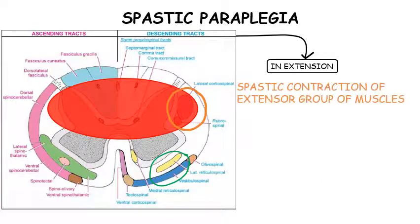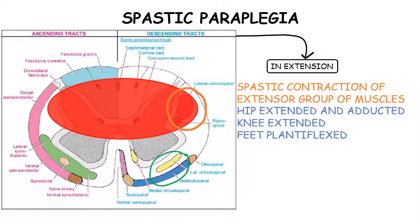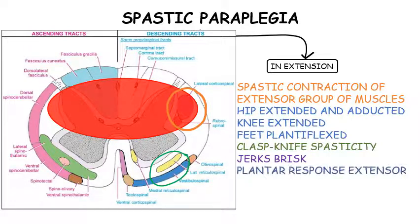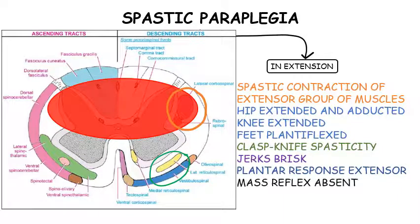Among the clinical features, there is spastic contraction of the extensor group of muscles, leading to adducted and extended hip, extended knee, and plantarflexed feet. Typical Phillipson's reflex or clasp-knife spasticity can be elicited. Deep reflexes are brisk and sometimes even clonus is present. Plantar reflex is extensor. However, mass reflex is absent here.